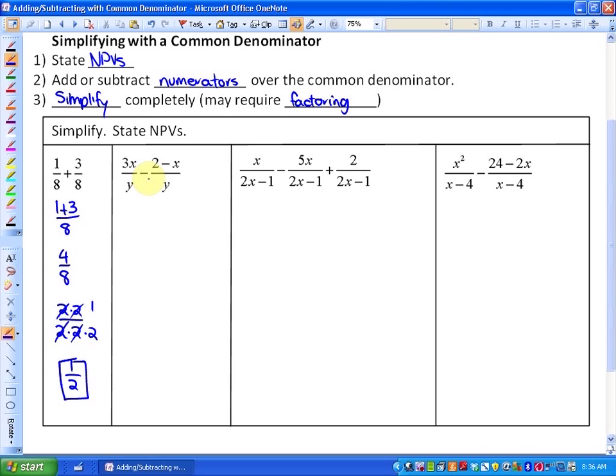In this next example, something we need to be careful of is that the subtracting sign means you're taking the opposite of both terms in your second rational expression. First, we should state the NPVs. Our non-permissible values regarding our denominator is that y cannot equal 0.